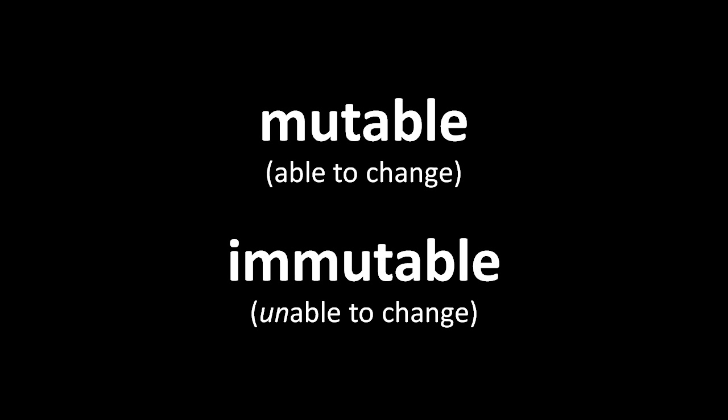So far, we've introduced 6 different data types in Pigeon: numbers, strings, booleans, the value null, functions, and now lists. Values of these types are all immutable, except lists, which are mutable.